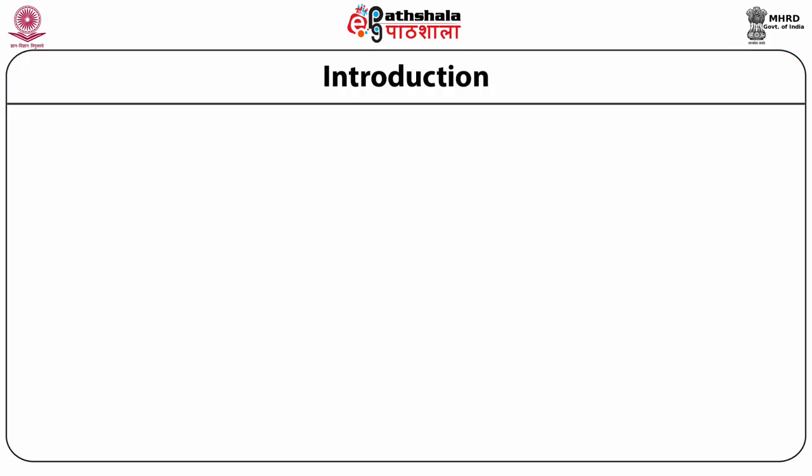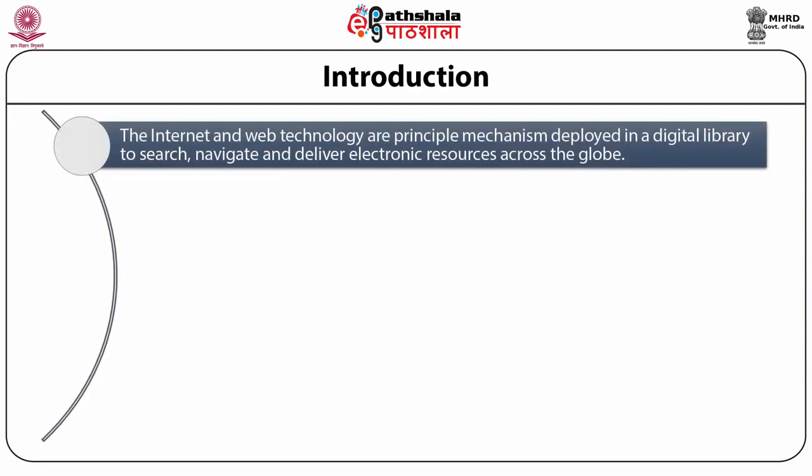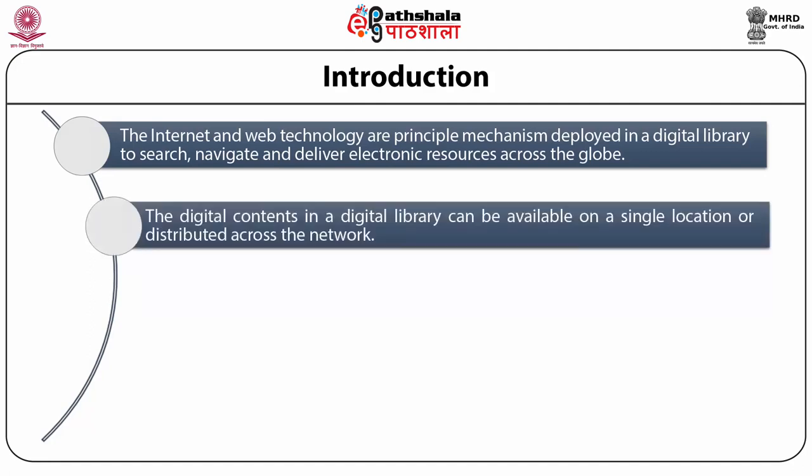Let's have an overview of digital library architecture. The internet and web technologies are principal mechanisms that are deployed in digital library to search, navigate and deliver electronic resources to the globe. The digital contents in a digital library can be available on a single location or it may be distributed across the network.